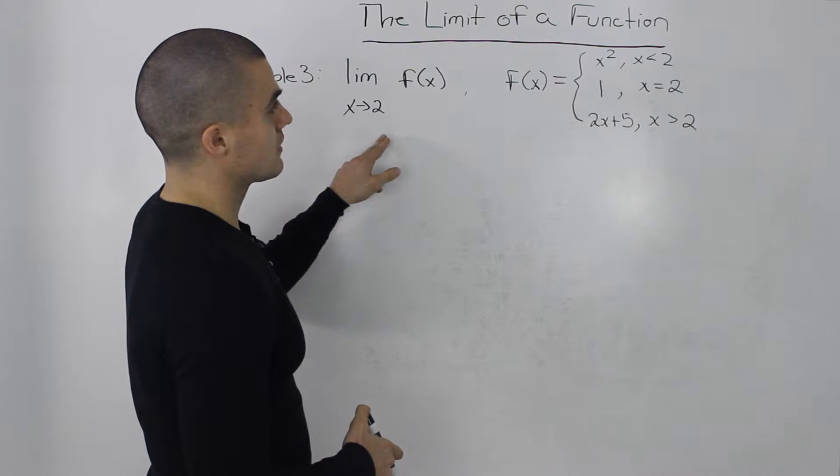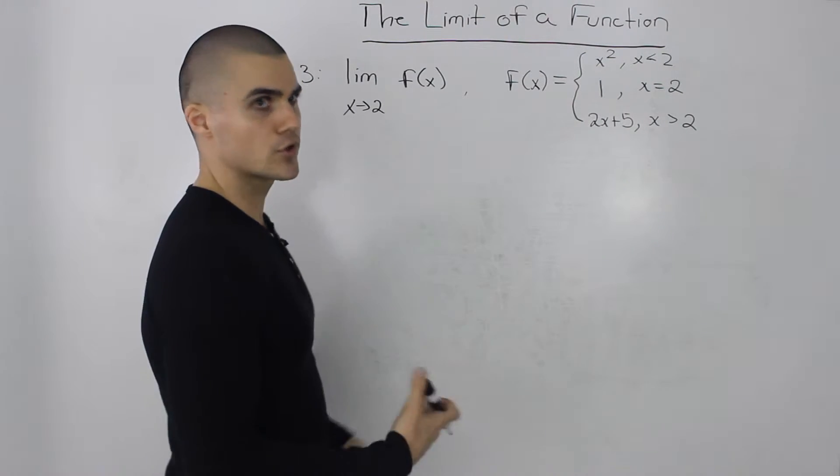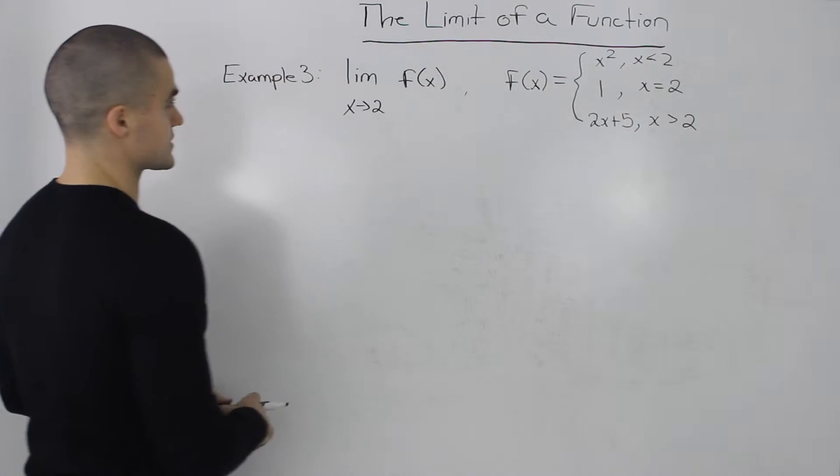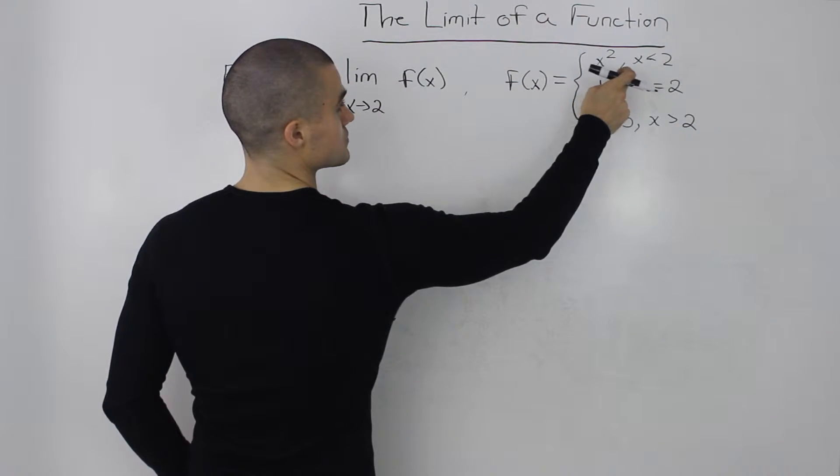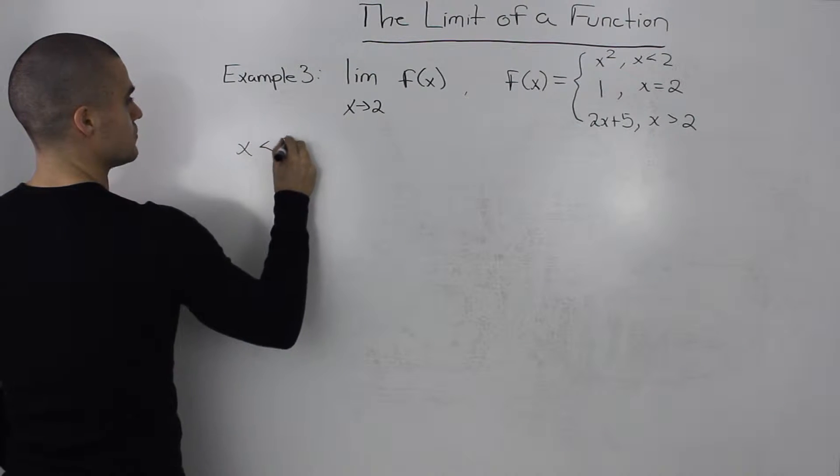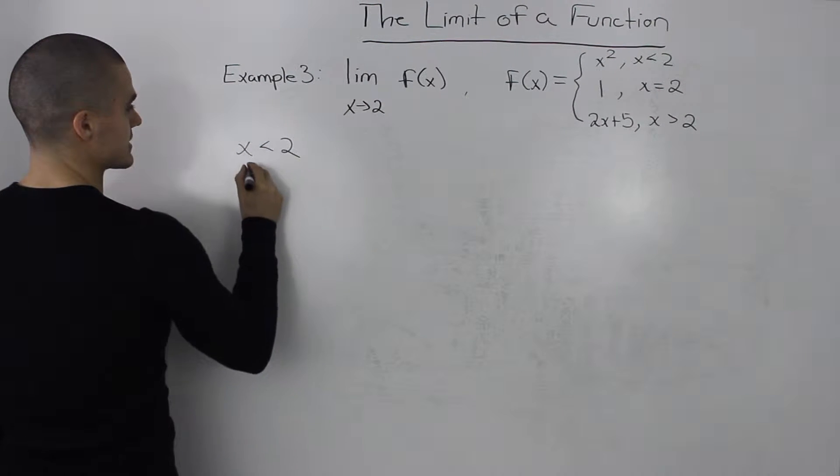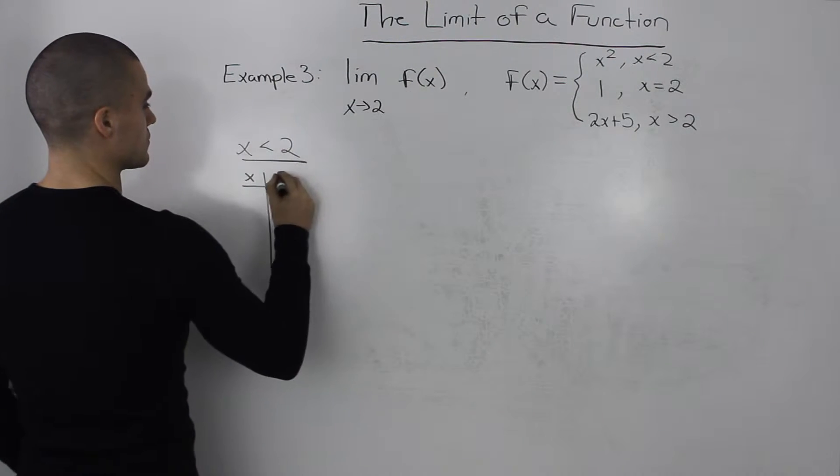So to solve this limit, if you recall, we could either use a table of values or graphing. I'm going to use both actually in this case. So let's make a table of values for the x is less than 2 part. And when x is less than 2, then the y value is equal to x squared.